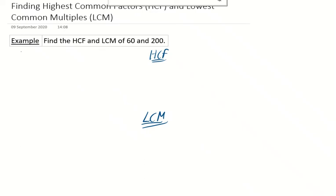This video we're going to look at how we find the highest common factor and the lowest common multiple. In this example it says find HCF, which is the highest common factor, and the lowest common multiple of 60 and 200, and we're going to do this using the ladder method.